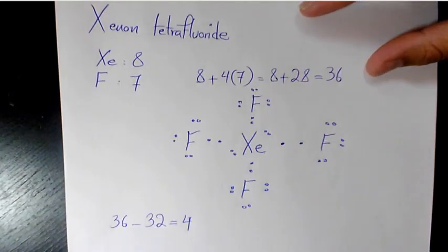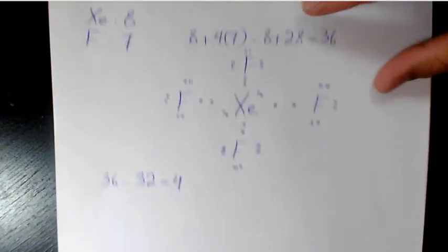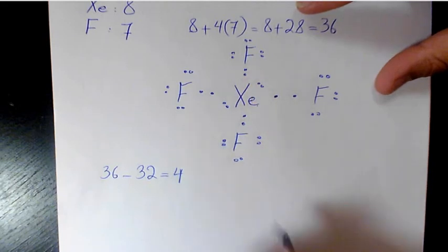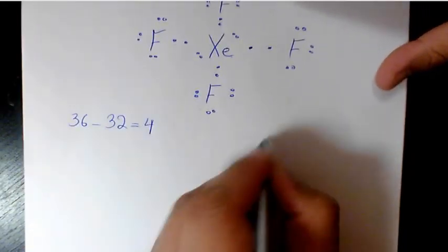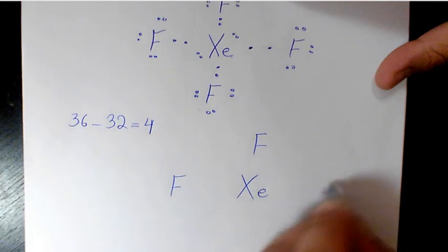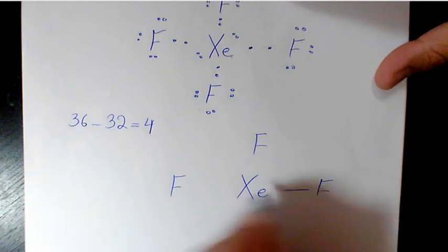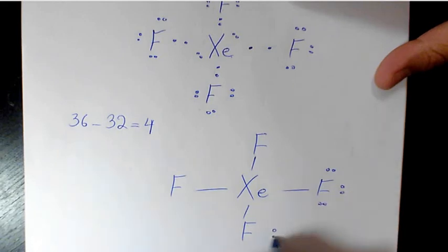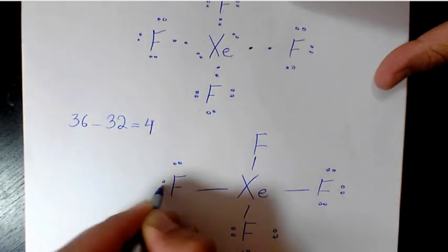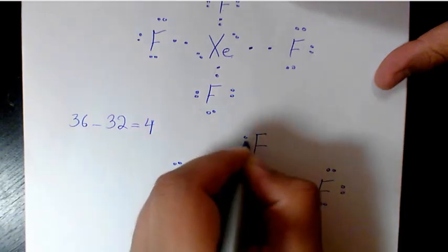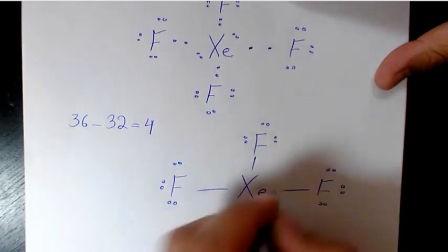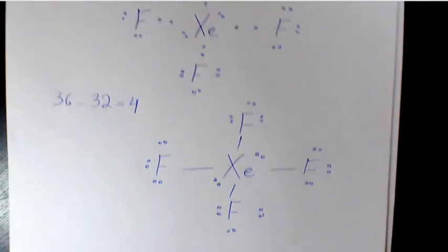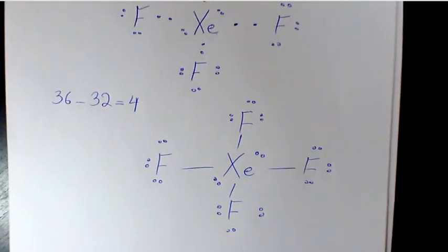That's going to be the Lewis structure. Now we replace the shared electrons with dashes. So we have Xe with F, F, F, and F, connected by four single bonds shown as dashes, and xenon has two lone pairs on it. That's the Lewis structure for xenon tetrafluoride.